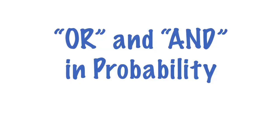Today we'll be looking at a couple of words that show up in probability questions. One of them is OR and the other is AND. It's easy to get them confused, so I want to be clear about what each of those means and how you would calculate the answer, specifically by avoiding one very common trap that people tend to fall into when first learning probability.